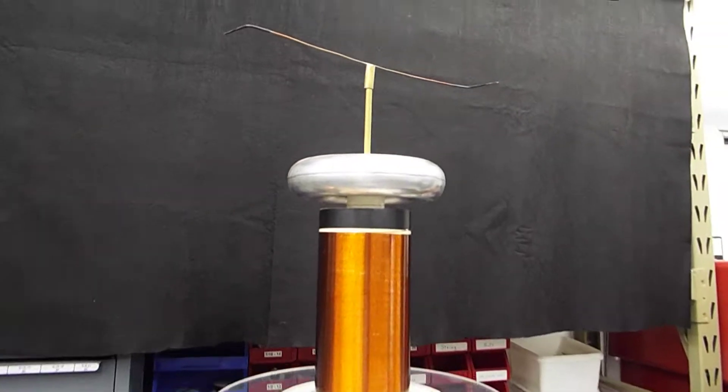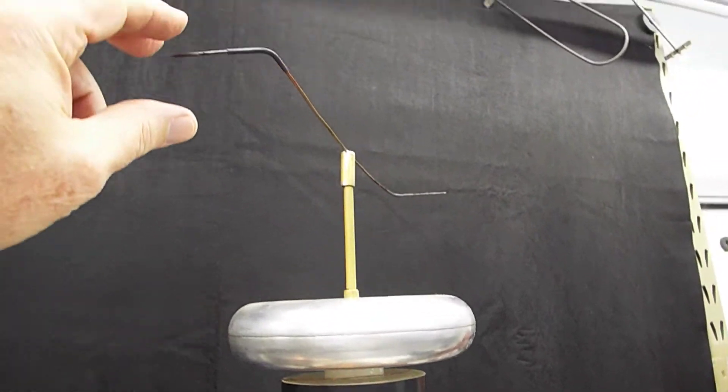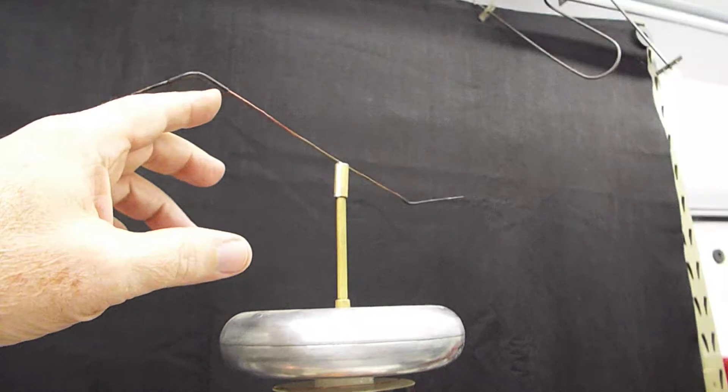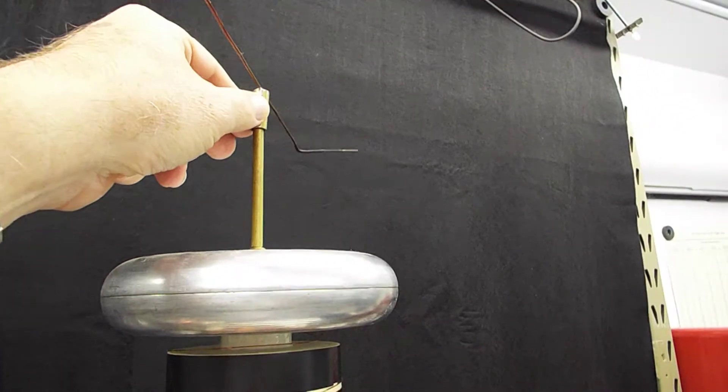The rotor is just sitting up here. It's just a piece of wire with two 90-degree hooks on it. It rotates freely on the spindle up here.